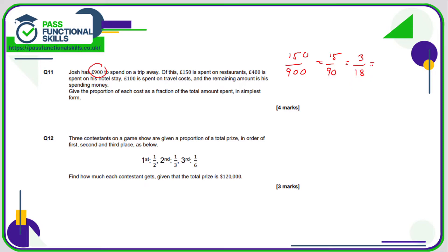Can we simplify 3/18? Do 3 and 18 appear in a times table? Yes, they're both in the three times table. 3 divided by 3 is 1, 18 divided by 3 is 6, so we can say that for restaurants the proportion is one sixth.